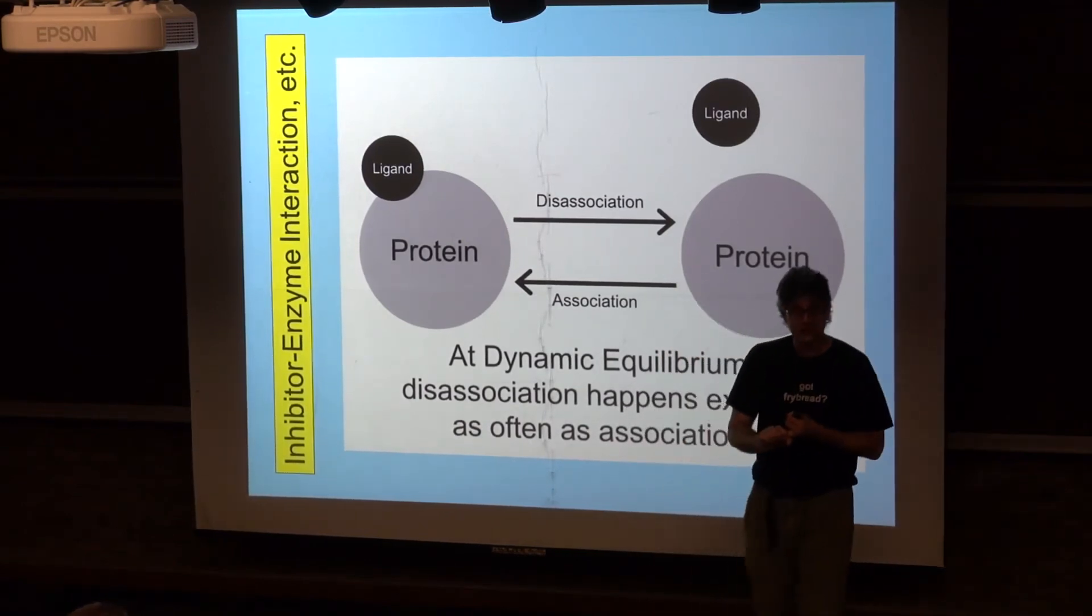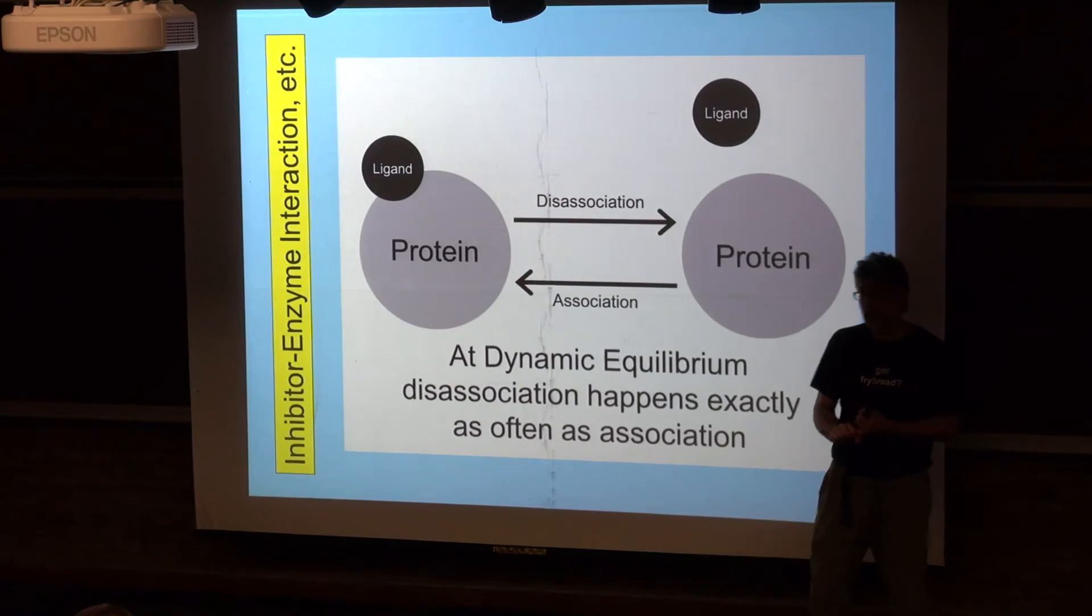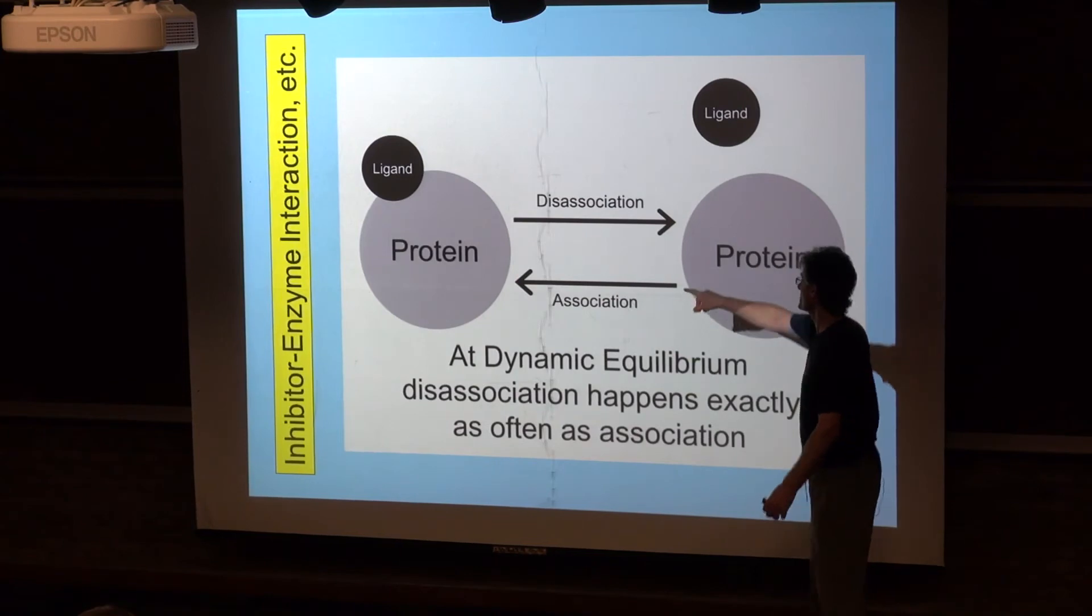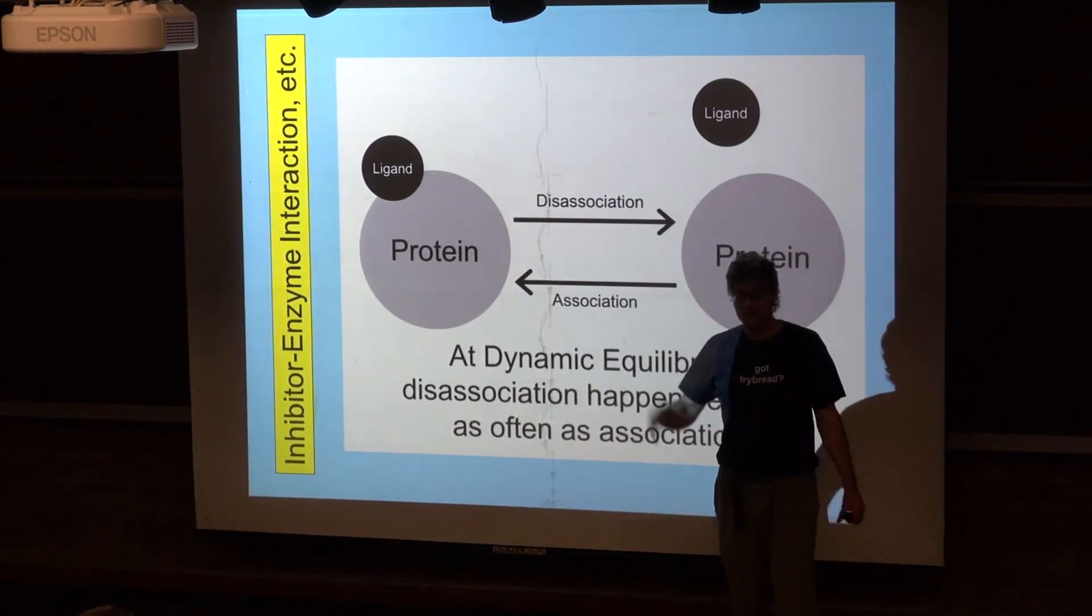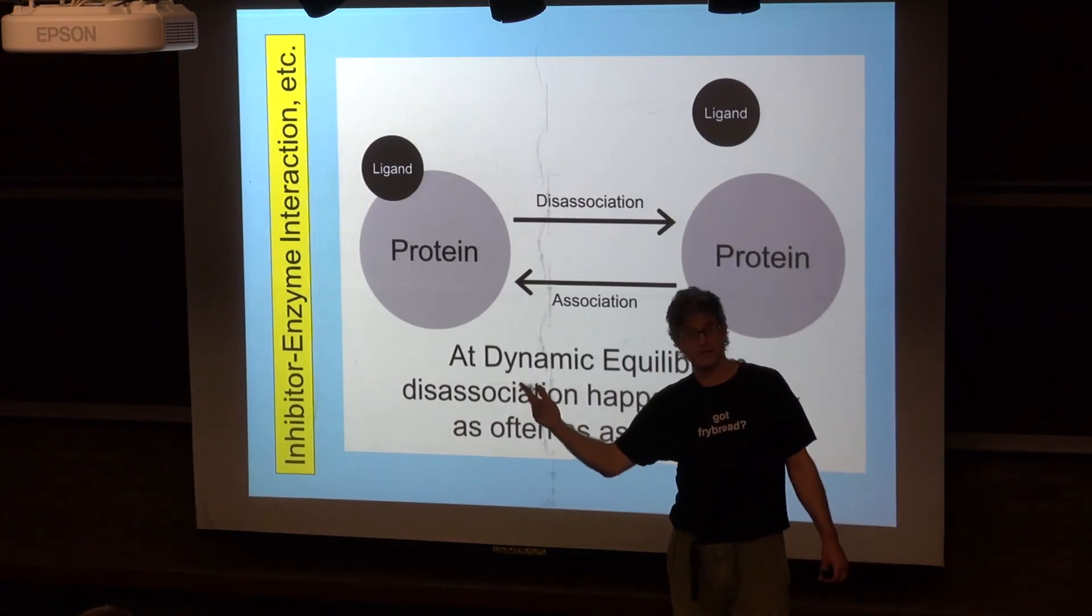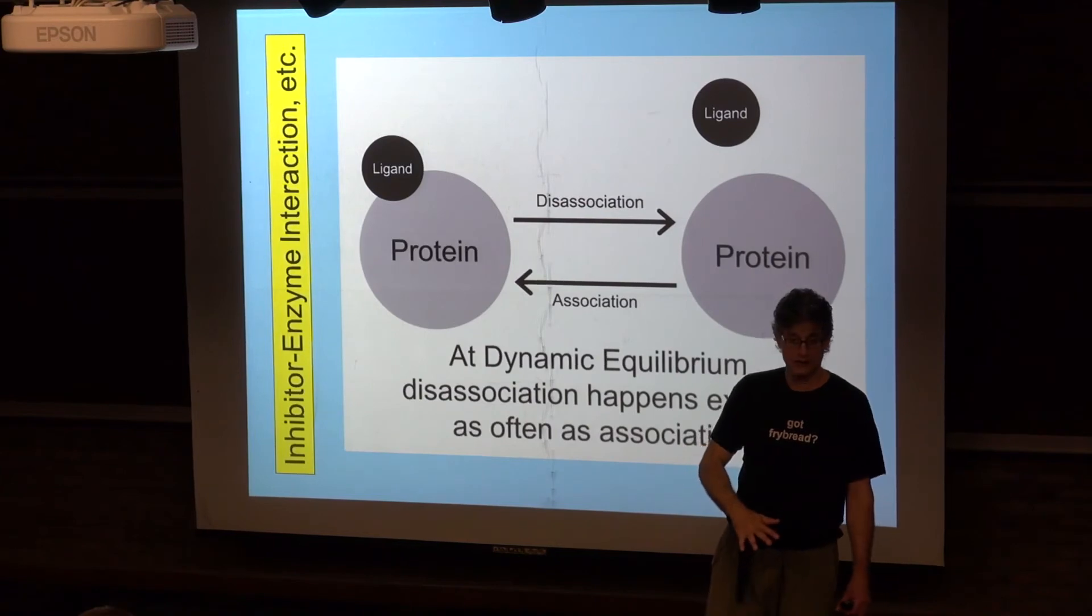The long and short of it is that if there's more ligand around, then even though the ligand is going on and coming off—it's on, it's off, it's on, it's off—if there's lots of ligand around, every time a ligand comes off, a new ligand is going to come along and bind.